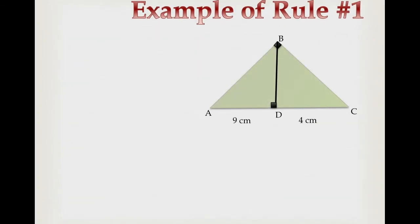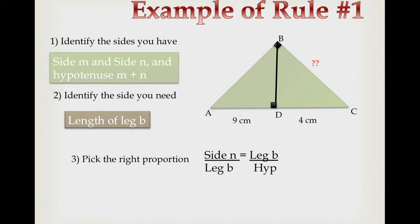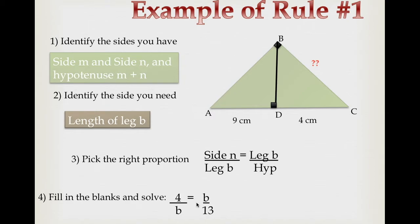For leg B, here's an example: I've given you M and N and want you to solve for leg B. You have M and N, and notice you also have the whole hypotenuse — 9 plus 4 gives you 13. Identify leg B and pick the proportion: N over B equals B over the hypotenuse. Plug in: N is 4, hypotenuse is 13. You now have two Bs — B times B is B squared, and 4 times 13 is 52. Square root both sides and you get BC equals 7.21 centimeters.